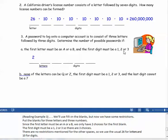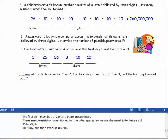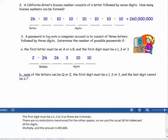There are no restrictions mentioned for the other spaces, so we use the usual twenty-six for letters and ten for digits. Multiply, and the answer is four hundred five thousand six hundred.